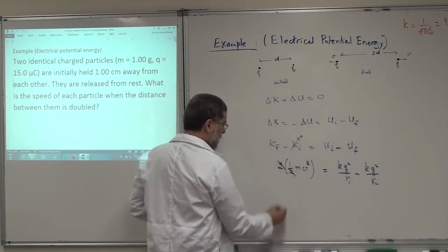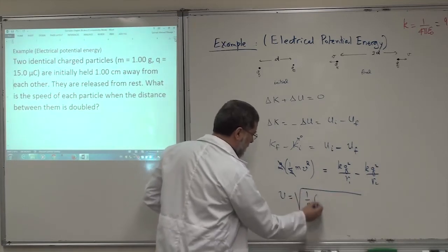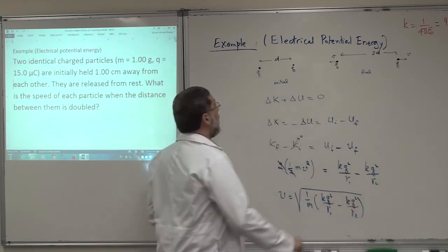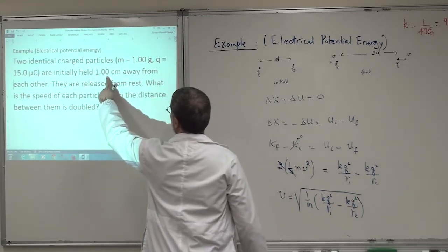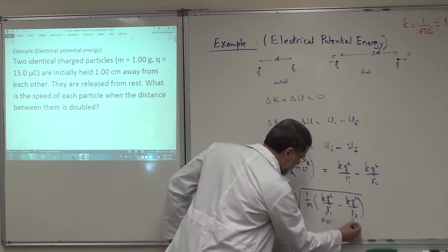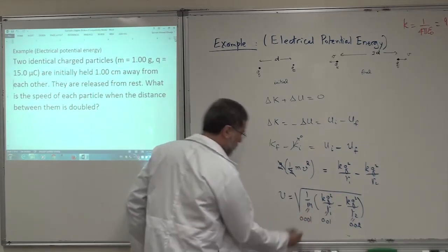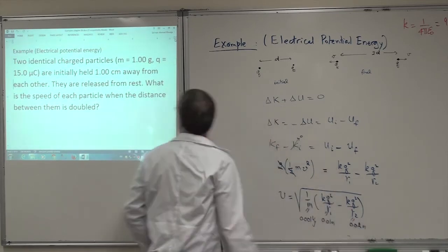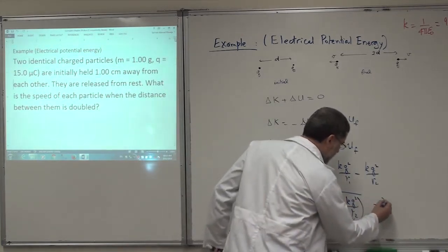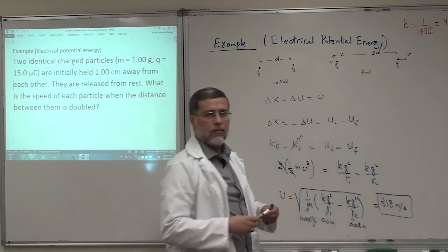The two factors of two cancel, so v equals the square root of (1/m) times (K q² over R1 minus K q² over R2). Be careful: R1 and R2 must be in meters — R1 is 0.01 m and R2 is 0.02 m since the distance doubles. Mass must be in kilograms, and charge must be converted from micro Coulombs to Coulombs. Doing the calculation correctly, the speed of each particle is 318 meters per second.